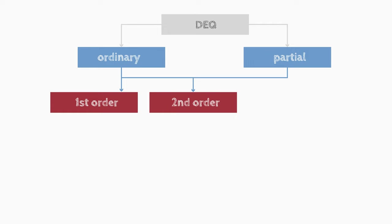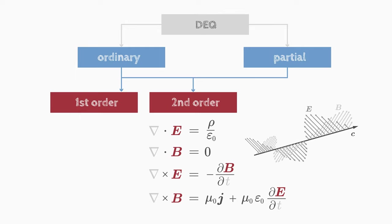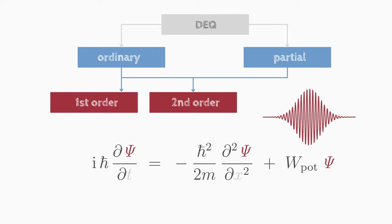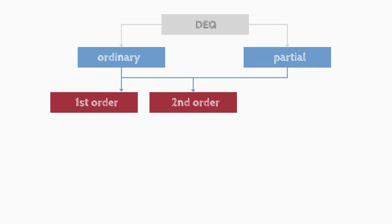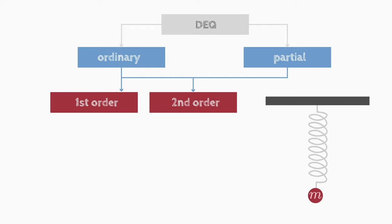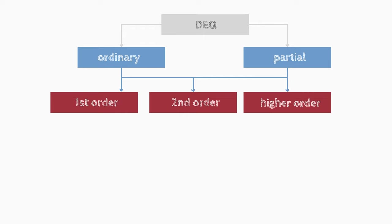Differential equations of second order, on the other hand, are somewhat more complex and also often occur in nature. Maxwell's equations of electrodynamics, Schrödinger's equation of quantum mechanics — these are all second order differential equations. Only starting from the second order can a differential equation describe an oscillation, and only starting from the third order can it describe chaos.